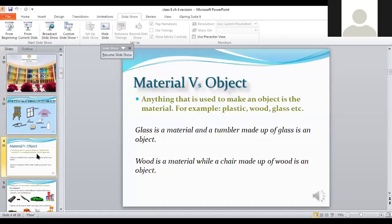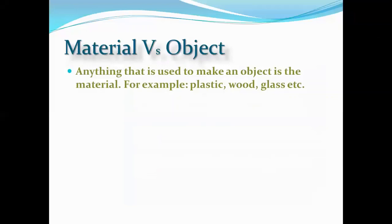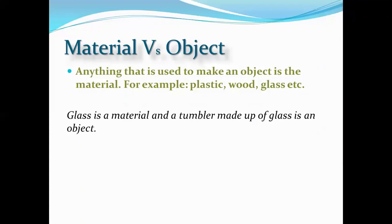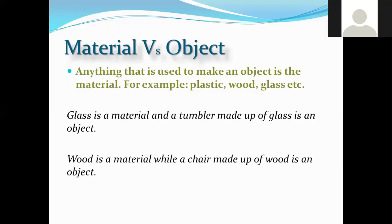When we look around ourselves, we see lots of things — some of them are materials and some are objects. Anything that is used to make an object is the material. For example, plastic is a material, glass is a material, and if we make a tumbler out of glass, it is an object. Objects are made up of materials.